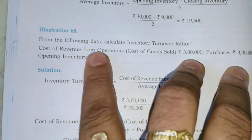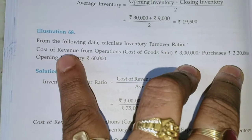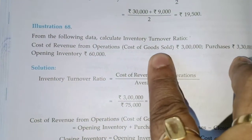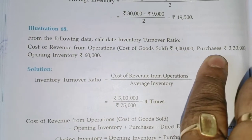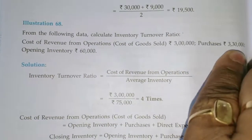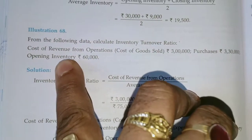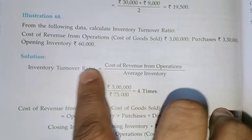Question number 68: Inventory Turnover Ratio. Cost of revenue from operations is 3 lakh, purchases are 3 lakh 30 thousand, and opening inventory is 60,000.